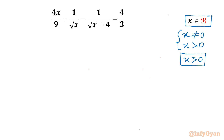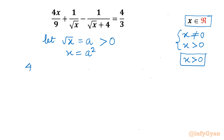Now we consider a substitution. Let square root x equal to a. From here, a must always be positive — any negative value of a is rejected. Since square root x equals a, we have x equal to a squared. Substituting, the equation becomes 4a squared over 9 plus 1 over a minus 1 over a plus 4 equal to 4 over 3.